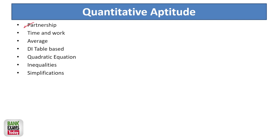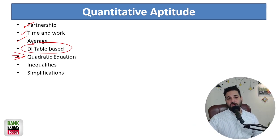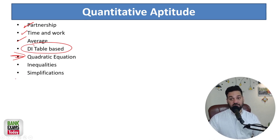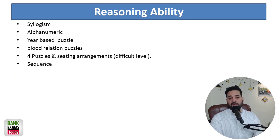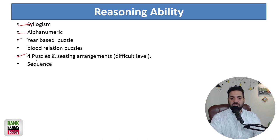For quantitative aptitude: partnership, time and work, averages, data interpretation (DI), and quadratic equations are important. For quadratic equations there is a very simple trick — if you join my course, you get a simple technique. Inequality and simplifications were also in the exam. For reasoning: syllogism, inequalities, alphanumeric series, puzzles, blood relations, and sequence and series.